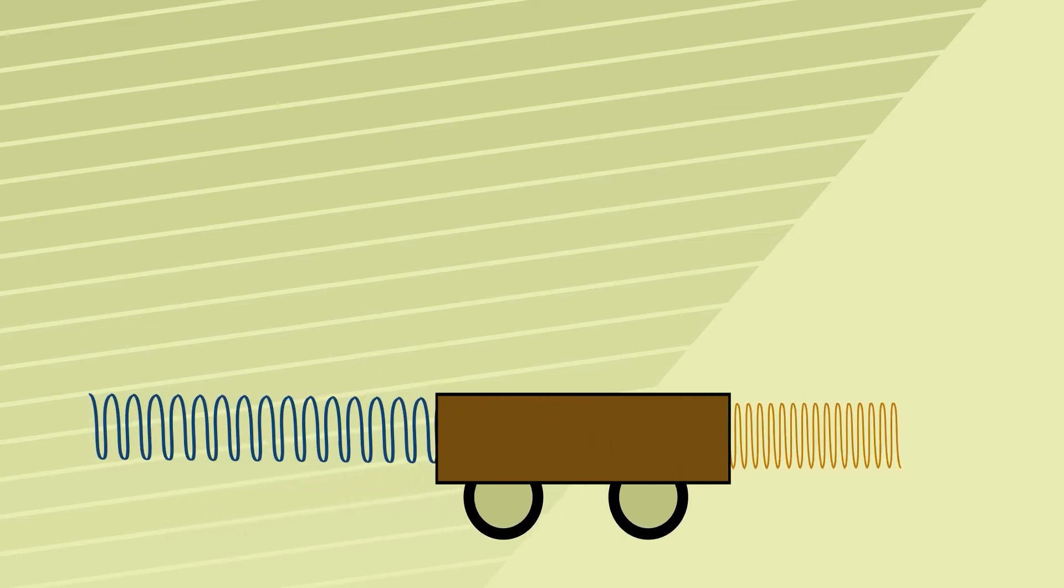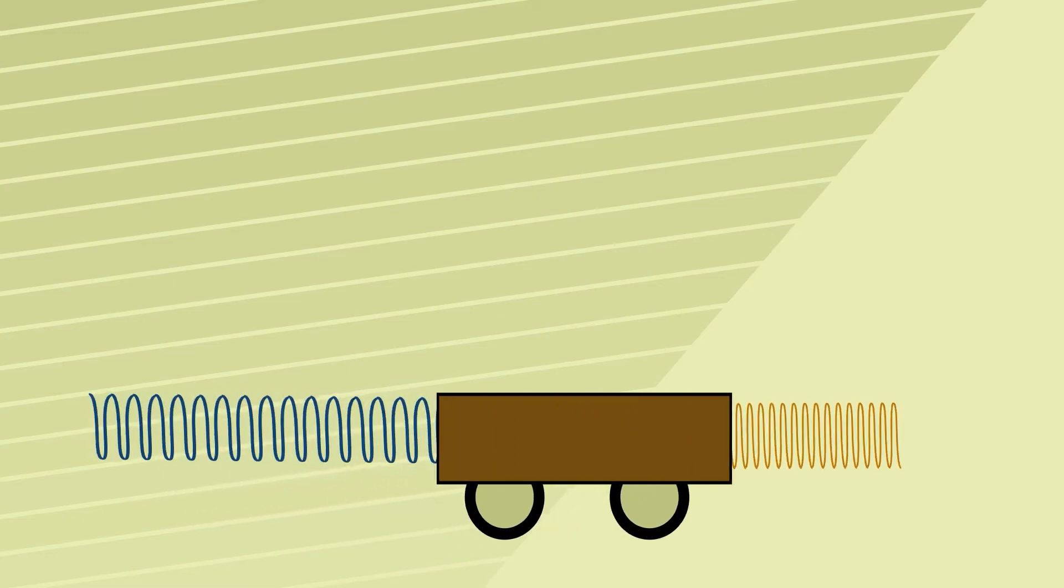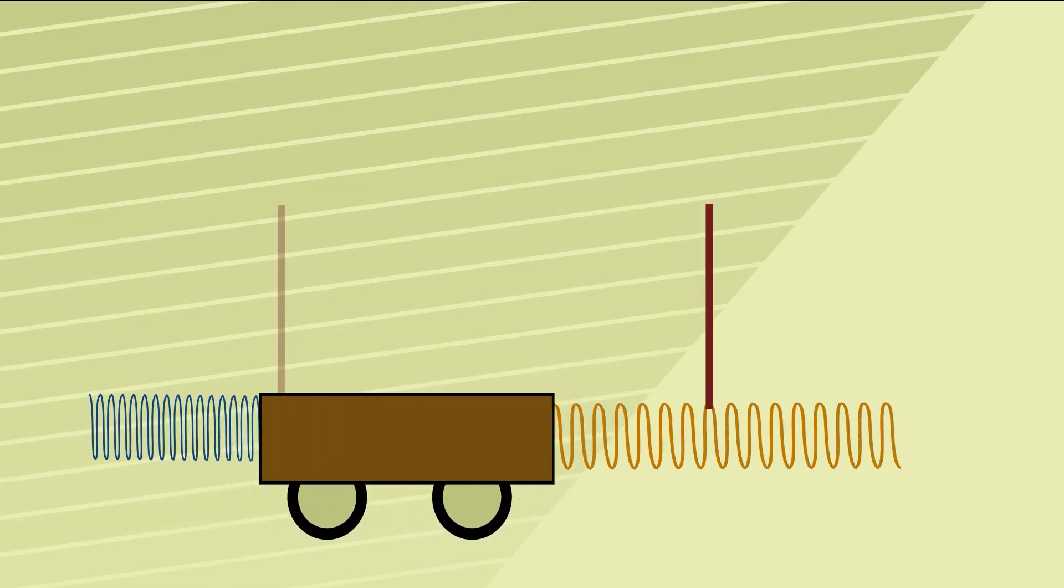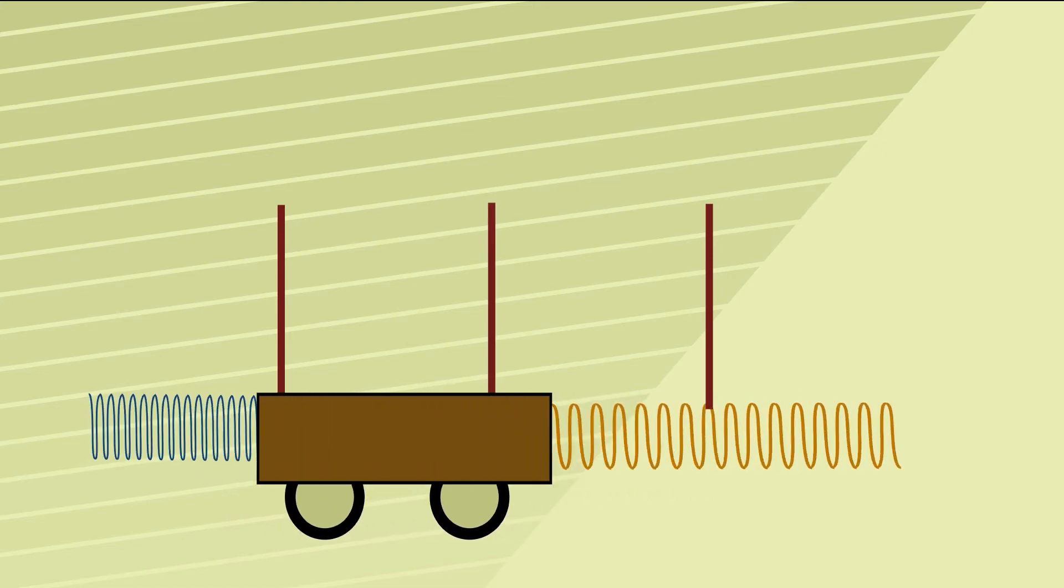We are interested to see its properties such as displacement at the extremes and midpoints of its motion and to this end we put a marker in the middle of the trolley. This marker will therefore show us the two maximum displacements and the midpoint.